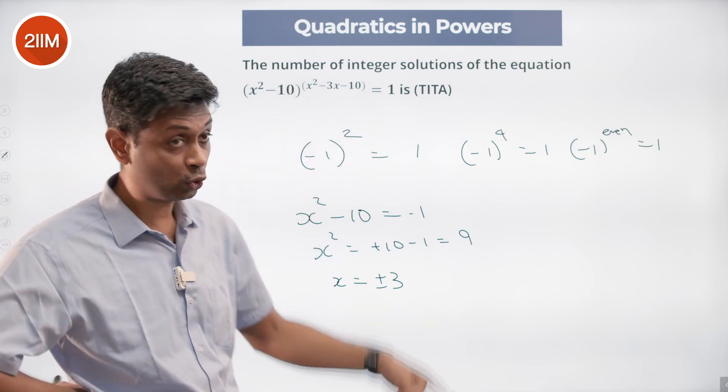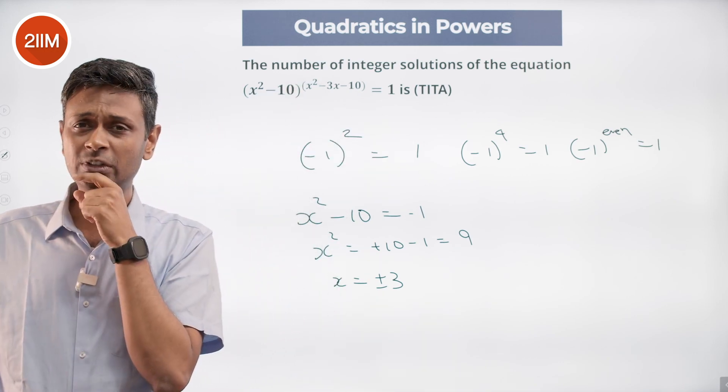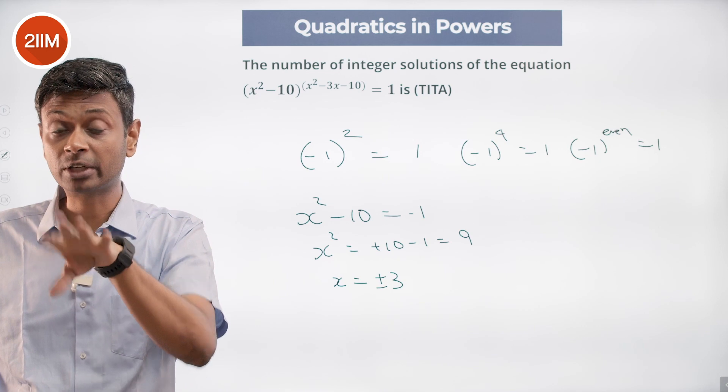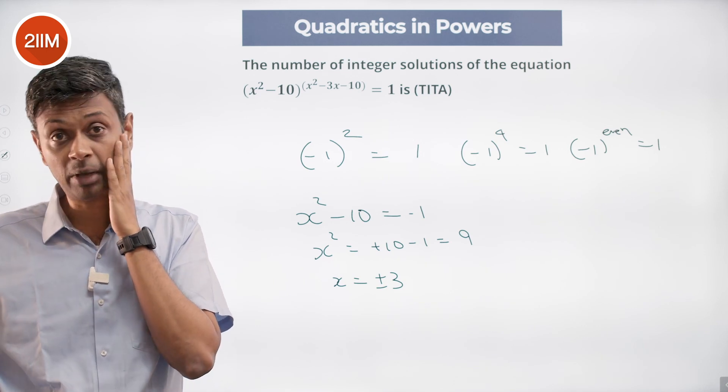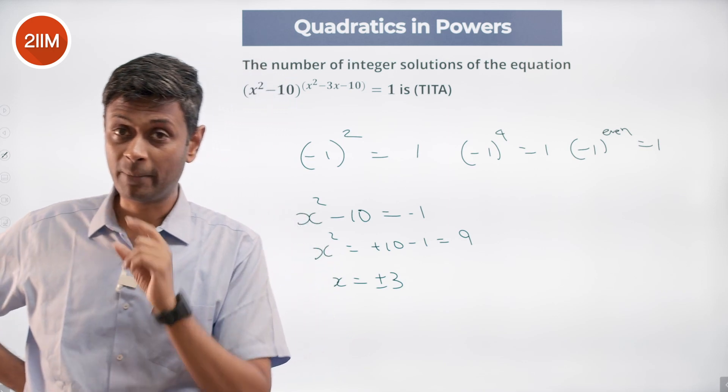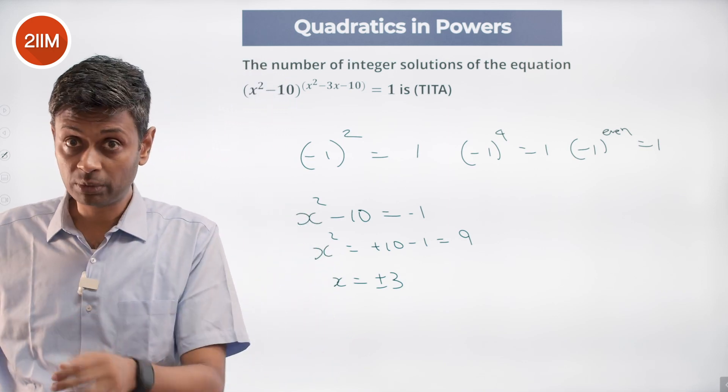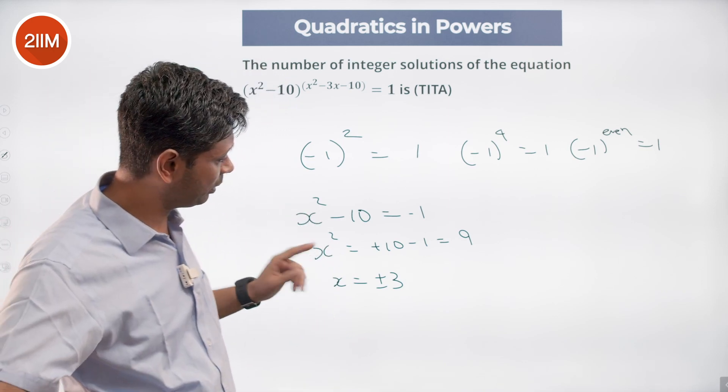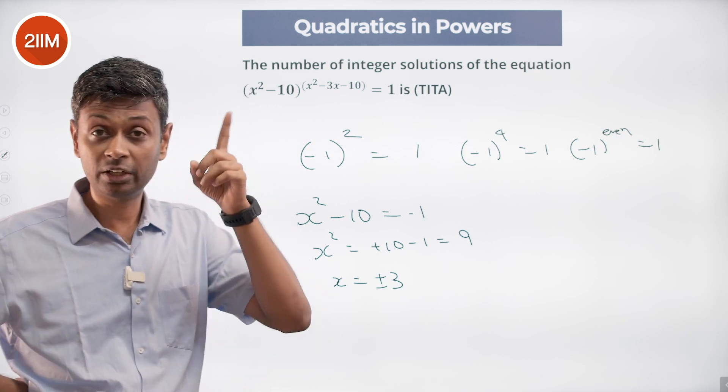because for +3 and -3, my exponent should be an integer. More than that, it should be an even number. If it's an even number then I am happy. But -1 to the power 101 will be -1. -1 to the power 94 will be +1. Substitute x = +3, -3. I have to verify whether it turns out to be an even number. Let's do that. This is (x - 5)(x + 2).